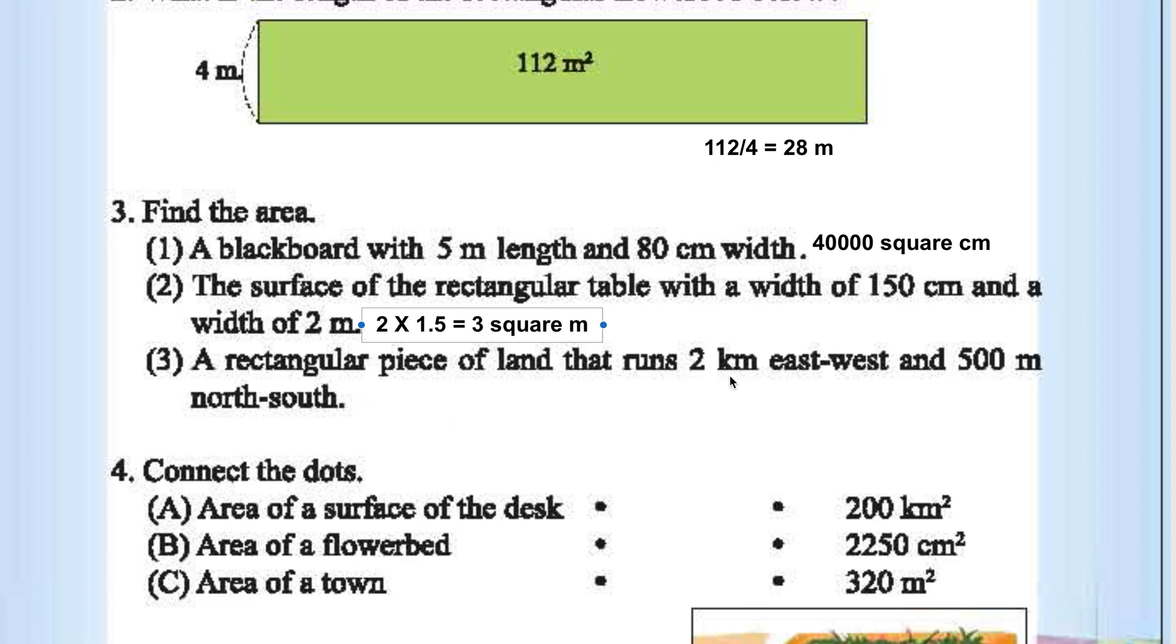Rectangle piece of land that runs 2 kilometers east-west and 500 meters north-south. Again, 2 into 0.5, 1 square kilometer.